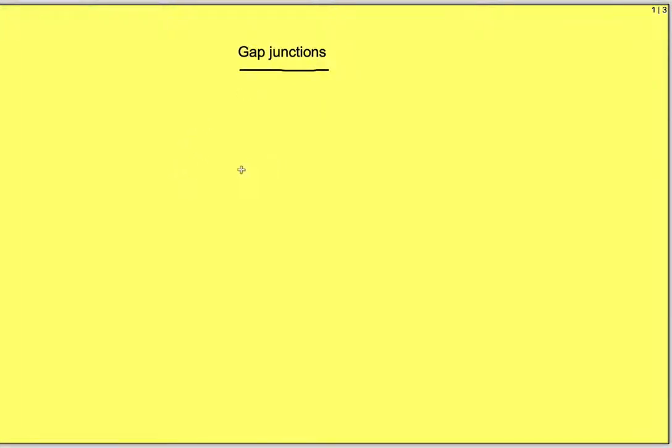Gap junctions are cell junctions that enable transport of substances between cells. There are two cells and via gap junctions substances can move from one cell to another. At gap junctions cells are situated very close to each other. In between the cells there is a space of approximately three nanometers, but the membranes do not make physical contact directly.